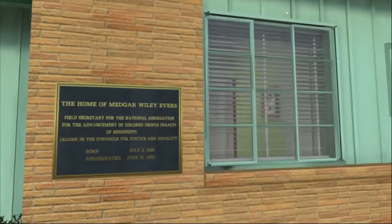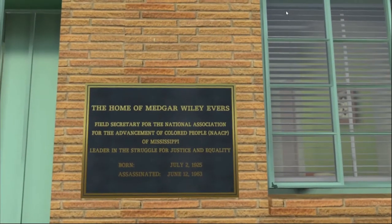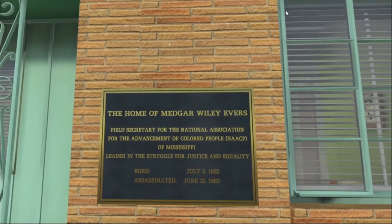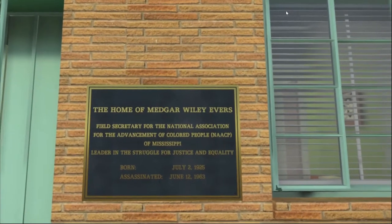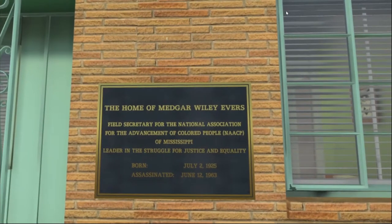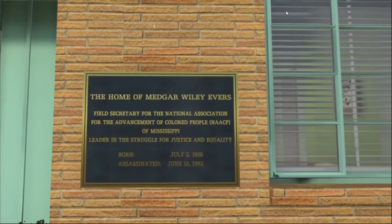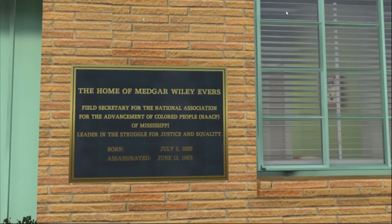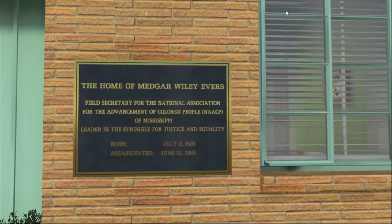Right up front and center, the first thing I'll show you is the commemorative plaque outside of the house. It reads: the home of Medgar Wiley Evers, field secretary for the National Association for the Advancement of Colored People of Mississippi. He was the very first field secretary for the NAACP in Mississippi — a leader in the struggle for justice and equality, born July 2nd, 1925, and assassinated right here at his home on June 12th, 1963.